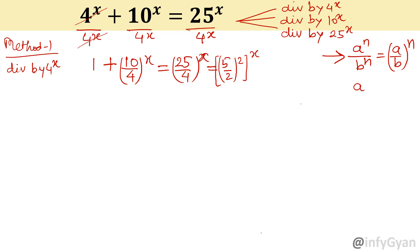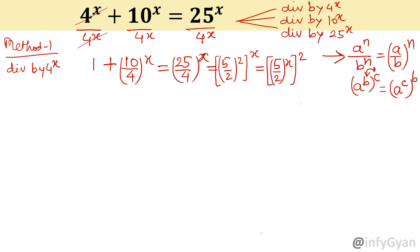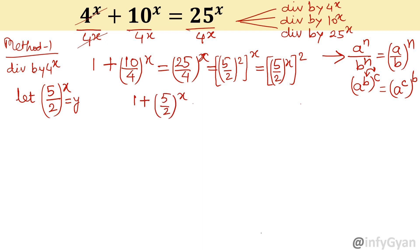Next step — I will write (25 over 4) as (5 over 2) whole square power x. Now the second property of exponent: a power b, whole power c, can be written as a power c, whole power b — you can exchange the exponents if required. So I will write (5 over 2) whole power x, whole square. Now let (5 over 2) whole power x equal to y. So ultimately this equation is 1 plus (5 over 2) whole power x equal to y.